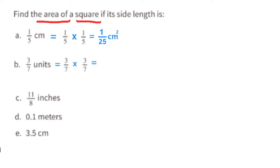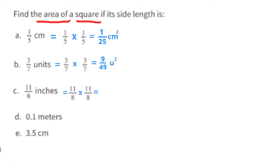Part C: side length is eleven-eighths inches. Eleven-eighths times eleven-eighths — 11 times 11 is 121 and 8 times 8 is 64 — so the area is 121 over 64 square inches.